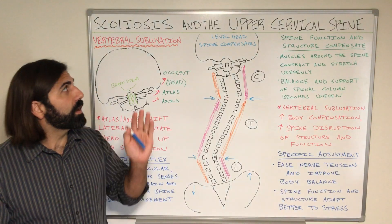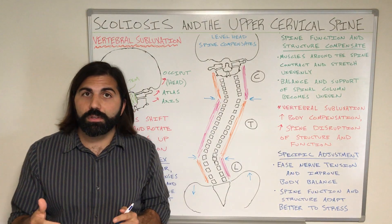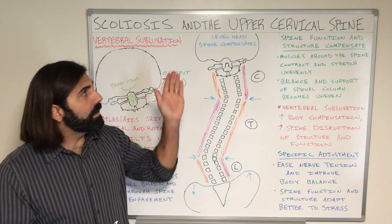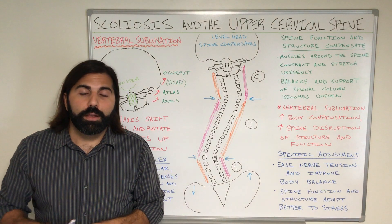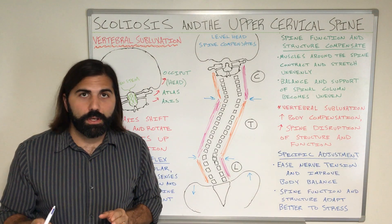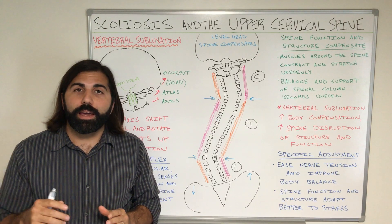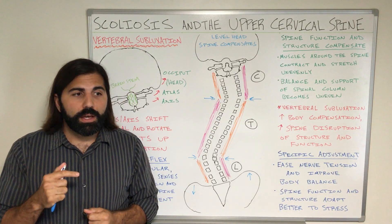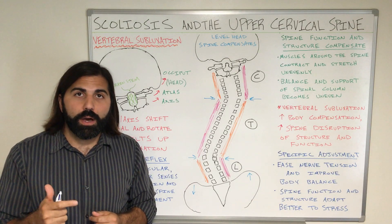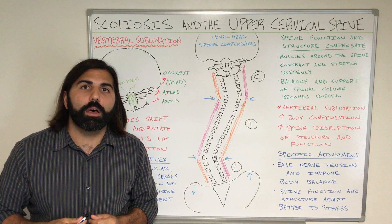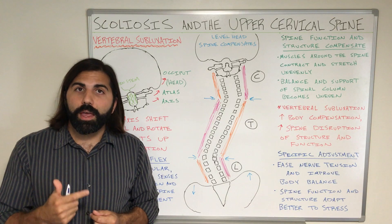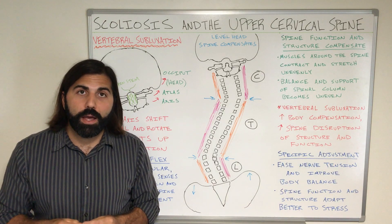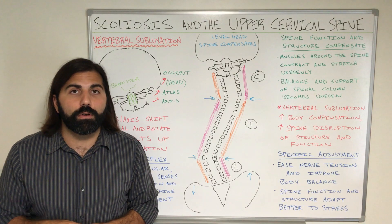Today on this video we're going to talk about the connection between scoliosis, or abnormal curves of the spine, and the upper cervical spine. My disclaimer at the start of all these videos is to let everyone know that chiropractic's goal is not to treat any specific sickness or disease of the body, but our main objective is to help improve the overall structural and functional integrity of the upper cervical spine and brainstem area of our nerve system.